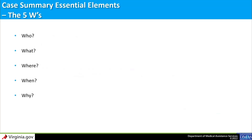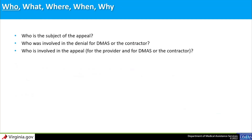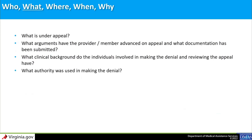There are five essential elements to a complete case summary: who, what, where, when, and why. 'Who' refers to the subject of the appeal — the provider, the member, and any DMAS contractors — who was involved in the denial, who issued the decision for DMAS or the DMAS contractor, who will represent the provider in the appeal, and who will represent DMAS or the DMAS contractor. 'What' refers to the decision under appeal, what arguments the provider and member have presented in support of their appeal, what documentation was submitted to support those arguments, and what the clinical background is of the individuals making the denial and reviewing the appeal.